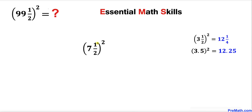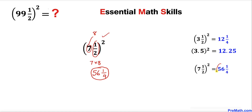Now let's look at the next example. We have the whole number seven. I'm going to write down seven times the number after seven, which is eight. So seven times eight is fifty six. The square of one over two is one fourth. So our answer turns out to be fifty six and one fourth, or in terms of decimals, fifty six point two five.